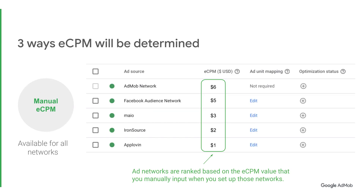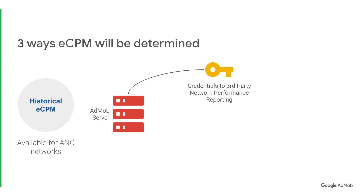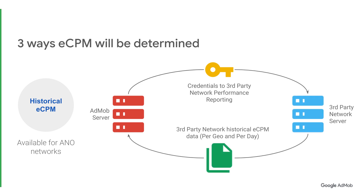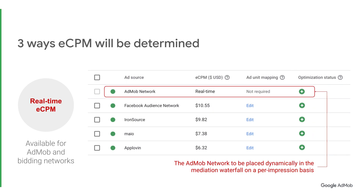Manual eCPM means you input the CPM value when you set up that network, but you need to be careful since the eCPM value you put there won't always reflect the latest performance of that network. For ANO, AdMob will use the network login credentials that you already entered to fetch the historical eCPM data to prioritize the ad networks on geolocation and ad unit level. For each request, all networks will recalculate their eCPM to find the correct positions in the mediation waterfall. The request will go from the top to the bottom of the waterfall until it finds a fill. For the AdMob network, we have our own unique solution called real-time eCPM that lets Google's advertisers provide a bid for every single ad request, and Google selects the highest winning bid. This bid is then slotted into the mediation waterfall in the order of the eCPM values for each network.